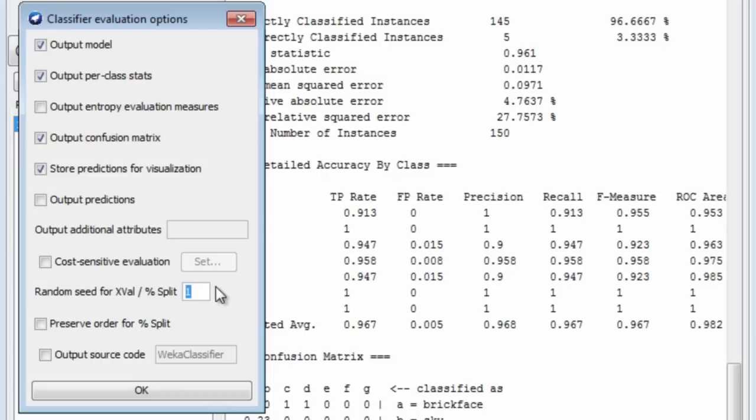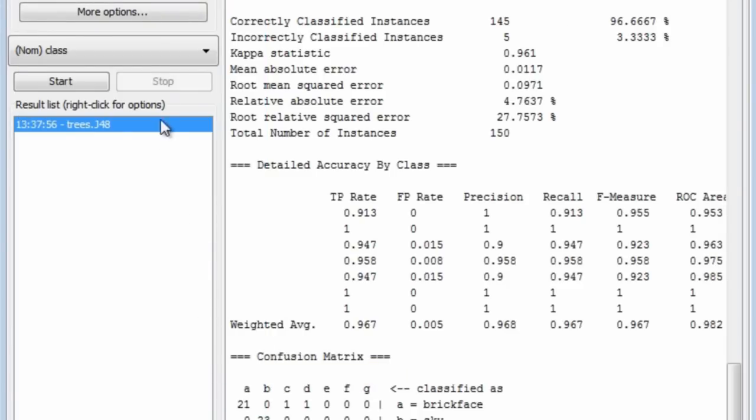That's set by default to 1. I'm going to change that to 2, a different random seed. We could also output the source code for the classifier if we wanted. I just want to change the random seed, and then I want to run it again.